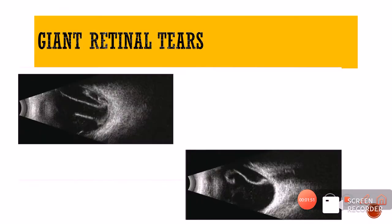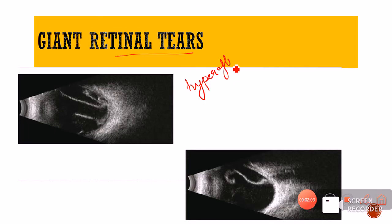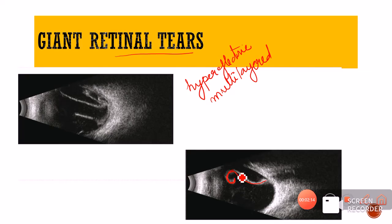These are cases of giant retinal tears. Giant retinal tears will look like a hyper-reflective, multi-layered structure — they are hyperreflective and also multi-layered, with a tendency to fold over each other. Here is another giant retinal tear — you can see how it is curling, with the tear present and it has curled like this.